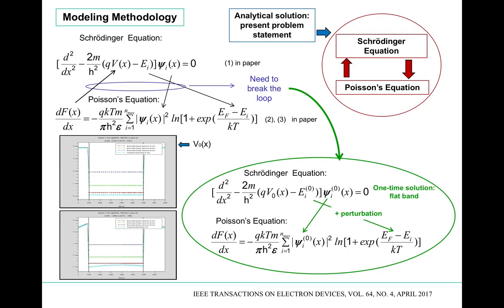Another way to break the loop is to add perturbation on top of the ground-state or flat-band sub-band energy eigenvalues and feed those into the Poisson's equation as E_i. In this methodology, the Schrödinger equation is solved only once at flat band, and we add the perturbation terms into the Poisson's equation, which is then solved as we vary the bias.